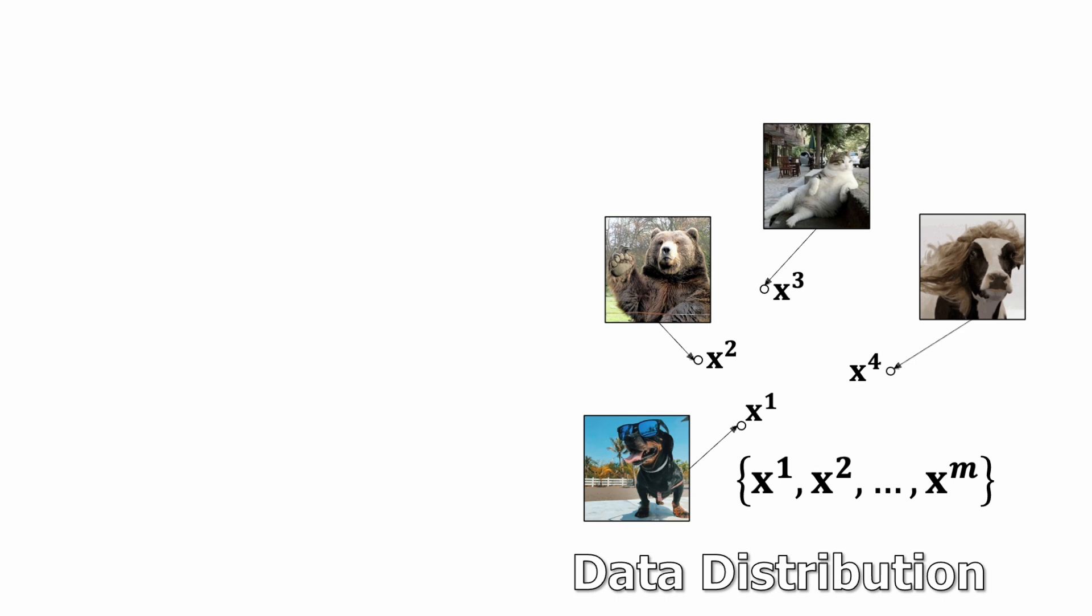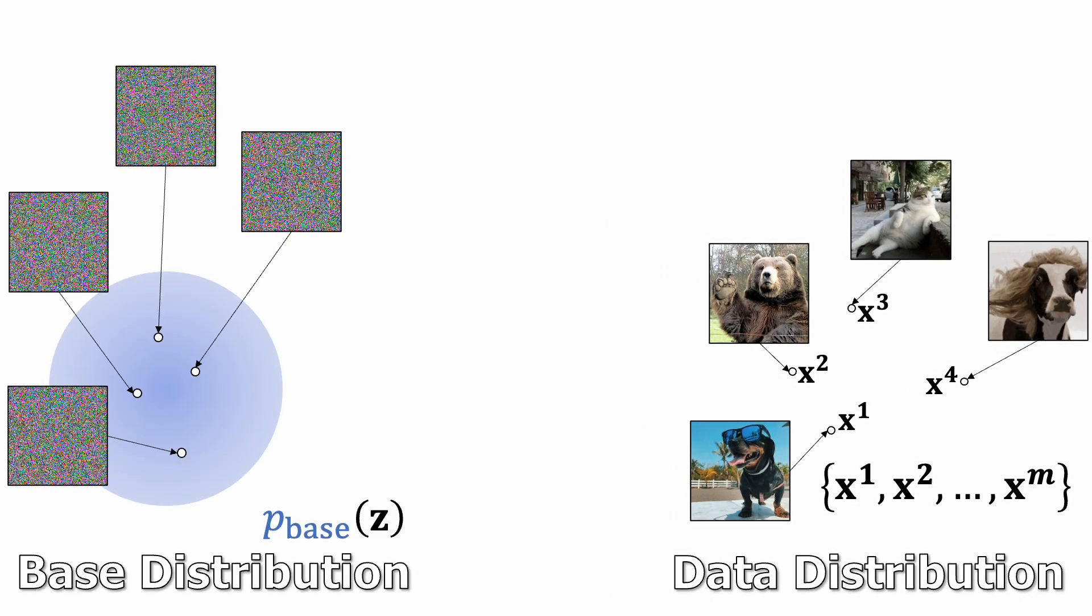On the other hand, we have simple base distributions, like a Gaussian distribution, from which we can easily draw samples and evaluate the likelihood. The idea is to train a generator that transforms a simple distribution into a data distribution.